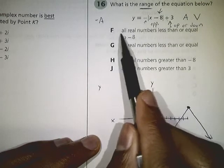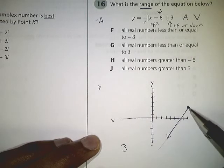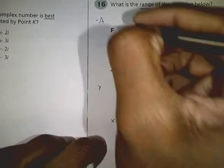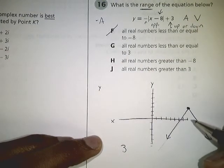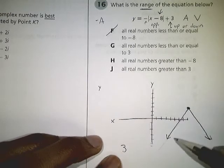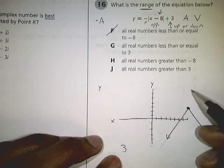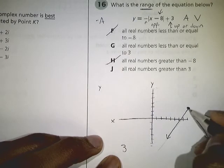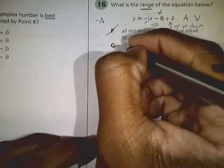Well, let's look at what our choices are. Choice F says all real numbers less than or equal to negative 8. Well, negative 8 doesn't matter because this is a positive 3. Negative 8 is going to be way down here somewhere, and of course we can have values that are higher than that, so F isn't correct. G, all real numbers less than or equal to 3 - we're probably thinking that that's going to be correct. H, all real numbers greater than negative 8, well that's going to be way up here somewhere, so that can't be it. And then J, all real numbers greater than 3, it's not going to be anything greater than 3, so that can't be correct either. So our correct answer should be G for number 16.